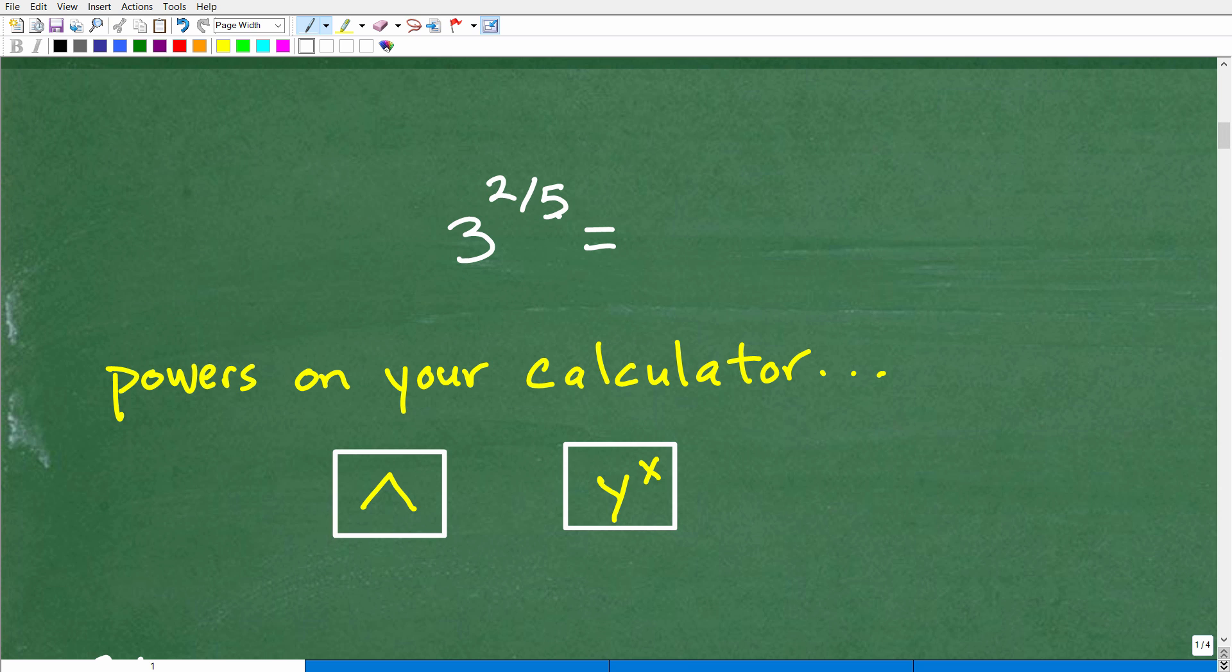Before we do this problem, 3 to the 2 fifths power, let's just do something easy like 2 cubed. What does this mean? It means 2 times 2 times 2. Of course, we know the answer is 8. So 2 to the third power is 8. But let's just make sure we can use our calculator correctly to do a little test problem. You can do 2 cubed in your calculator and make sure you get 8.